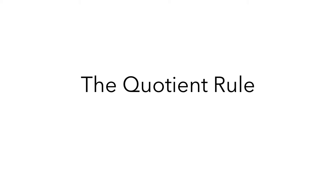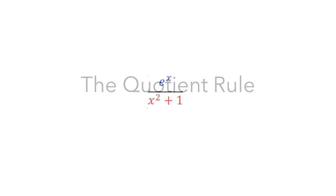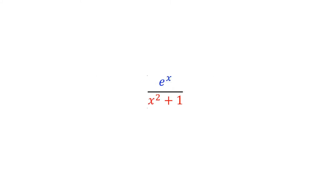In this video, I'll show you how to differentiate a function which is a quotient of two other functions. Let's start with the function e to the x divided by x squared plus 1. How can we compute its derivative?